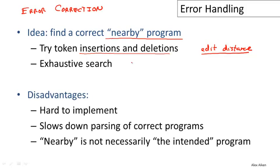There are a number of disadvantages to error correction. It's hard to implement and quite complex. It will slow down the parsing of correct programs because we need to keep enough state around to manage the search or editing in case we encounter an error. And 'nearby' is not really all that clear — various notions of nearby may or may not take us to a program the programmer would actually be happy with.